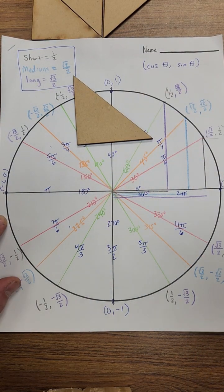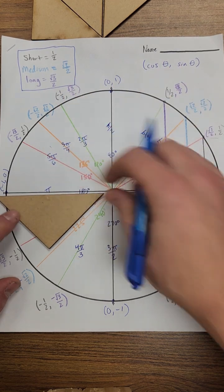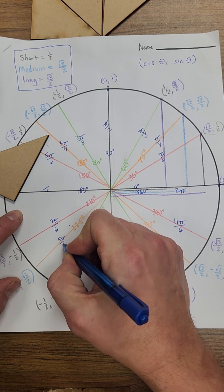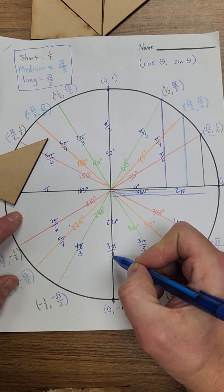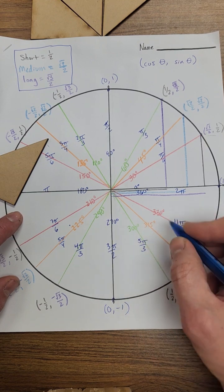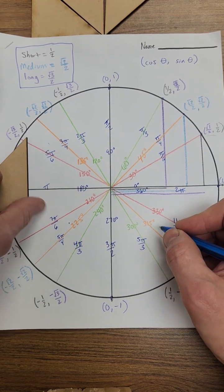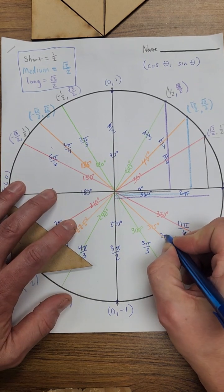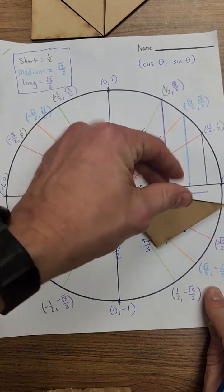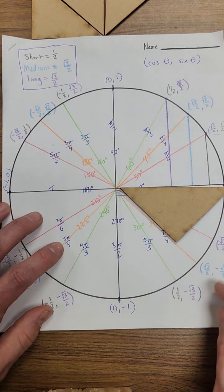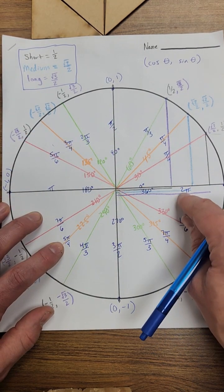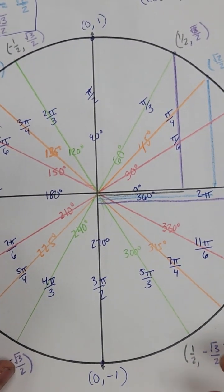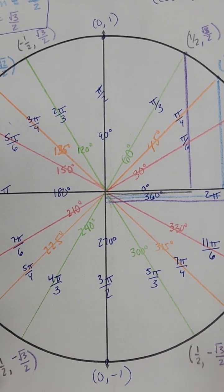Continuing on with the other quadrants: this would be the fifth one — 5π/4. Six π over four reduces to three halves, which we already have. And then this would be our seventh one — 7π/4. And lastly, eight π over four reduces to 2π, bringing us all the way back around. So now we have this all filled in with our radian measures.